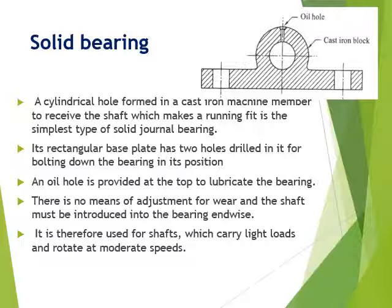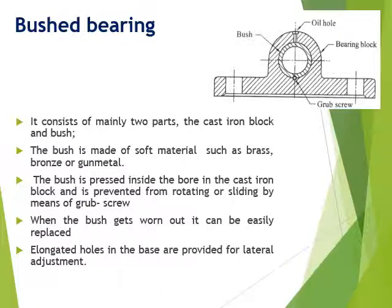In a bushed bearing, you can reuse the same bearing since it is used for shafts with light loads rotating at moderate speeds. As the name tells you, it has a bush. It is similar to a solid bearing but the bush can be replaced during wear and tear, which is an advantage. Instead of replacing the whole bearing, you just replace the bush, which is fixed by a grub screw.